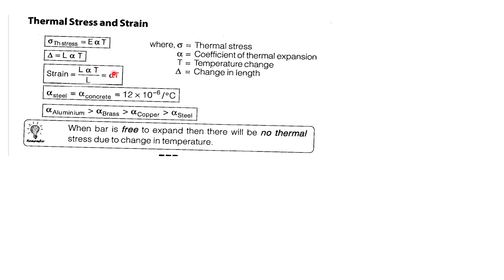Delta L = L·α·T. Materials referenced: aluminium, copper, brass, steel. When a bar is free to expand, there will be no thermal stresses due to change in temperature. Restriction of expansion produces thermal stresses.